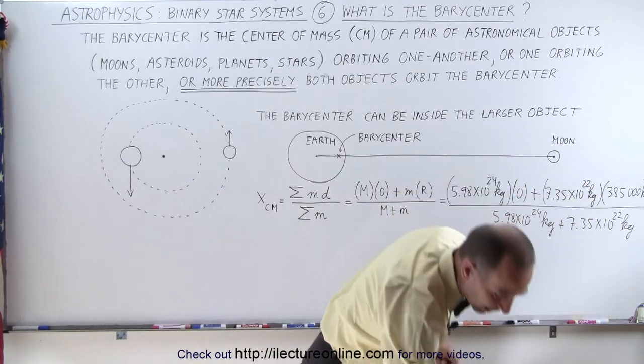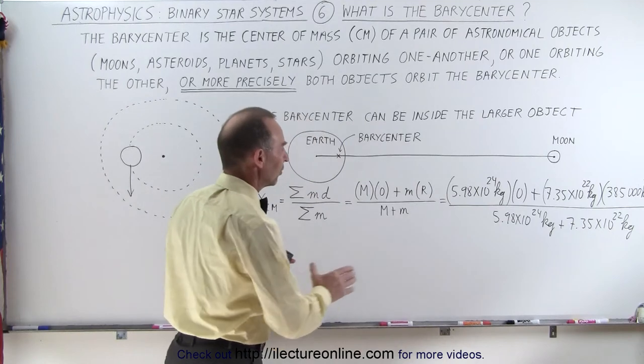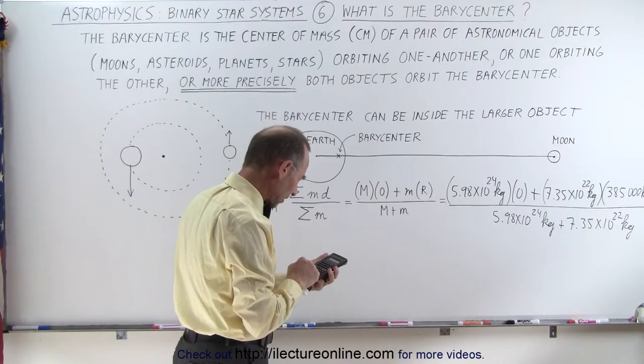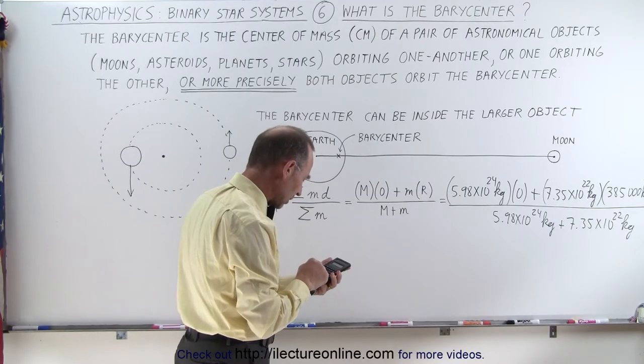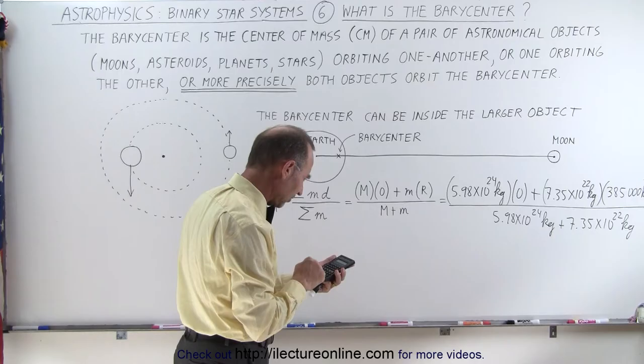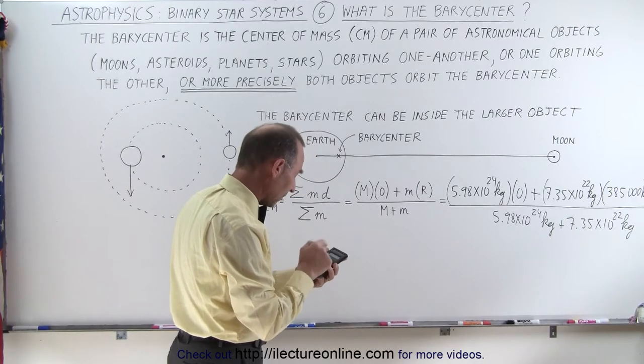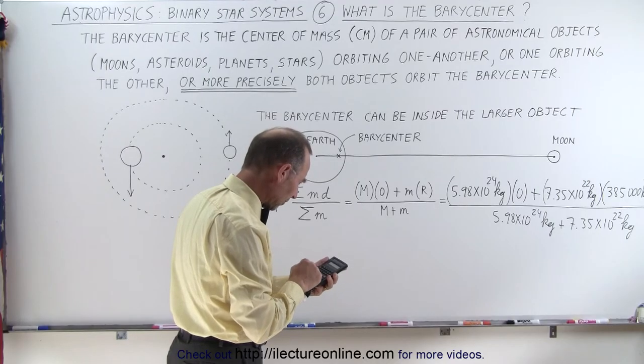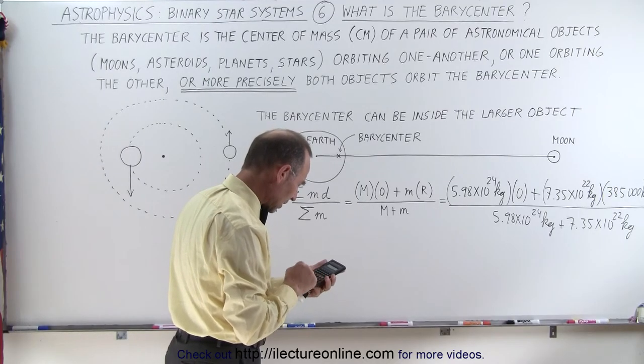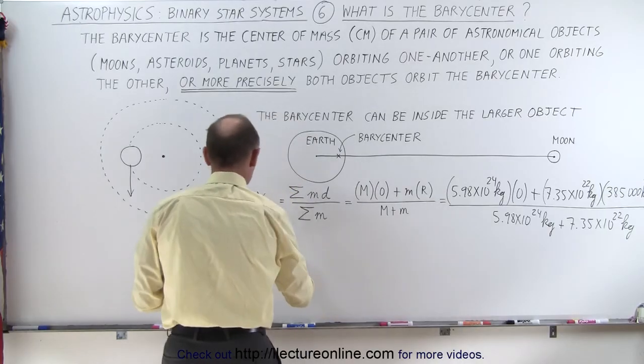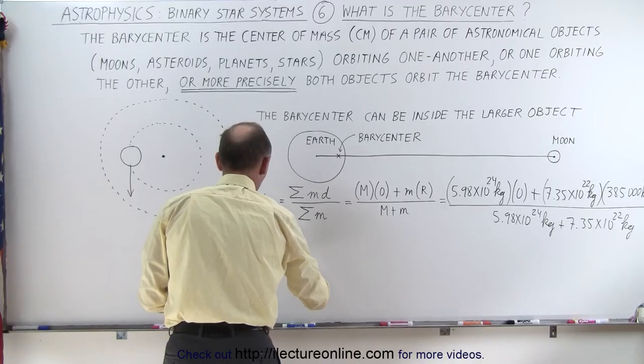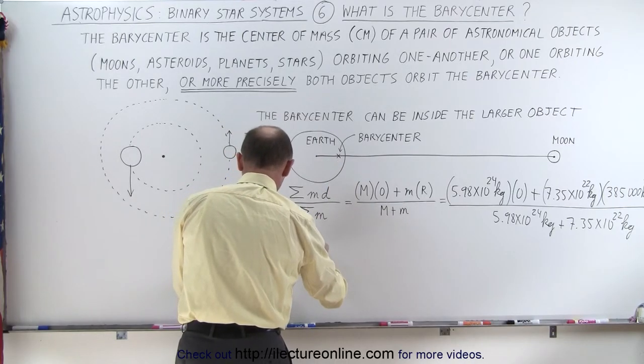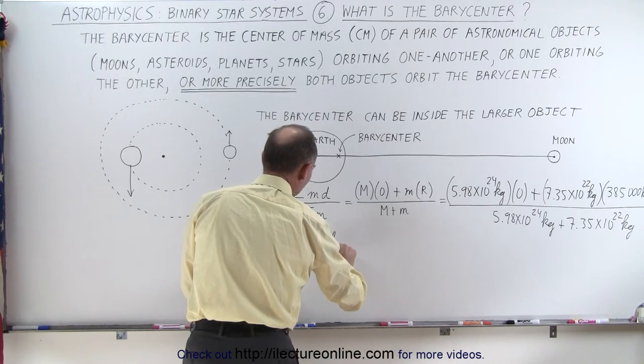Let's see where exactly the barycenter is of the Earth-Moon system. This is, of course, automatically zero. So we multiply 7.35 times 10 to the 22 times 385,000, and divide by the sum of 5.98 times 10 to the 24 plus 7.35 times 10 to the 22. The distance to the center of mass from the center of the Earth, which is the barycenter, equals 4,675 kilometers.